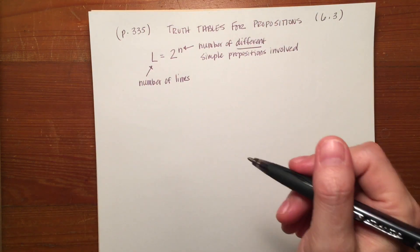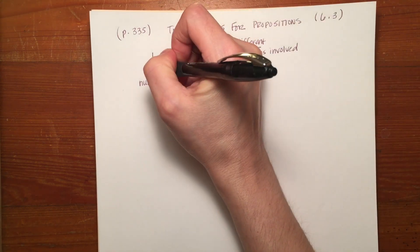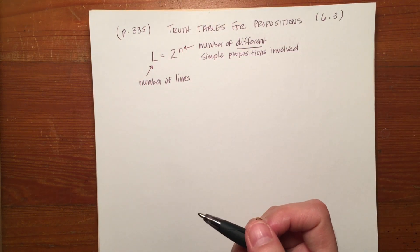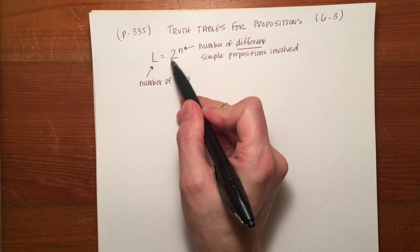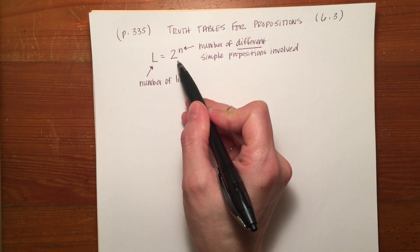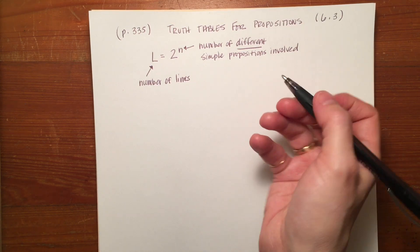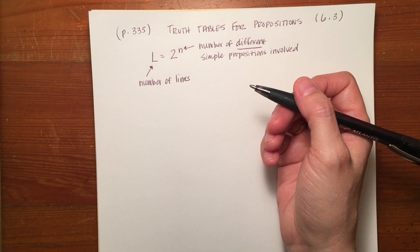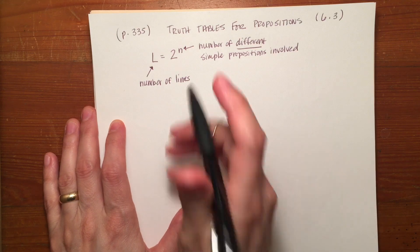If you take a look at page 335 in your book, you can see that if you don't want to learn the formula — which I would argue is the best way to do it — you can simply look at the number of different propositions versus the number of lines in the truth table. Because it's an exponent of 2, it's always the number of lines equals 2 to the power of the number of different simple propositions involved. So if there is one simple proposition, there will be two lines; if there are two simple propositions, there will be four lines, and so on.